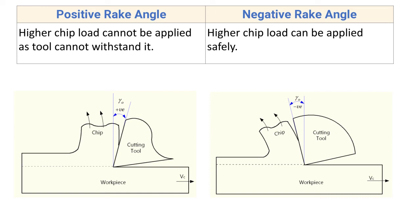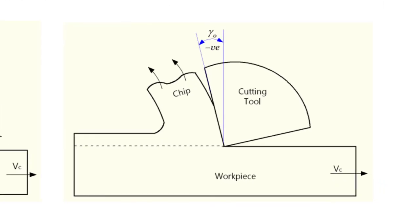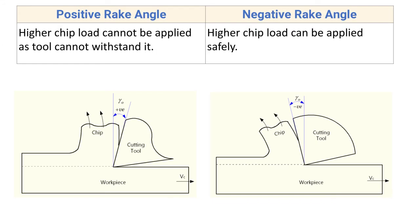For negative rake angle, higher chip load can be applied safely. With negative rake angle there will be more material at the tool tip, making this cutting tool strong, so we can use it at higher feed rates and higher chip loads safely.